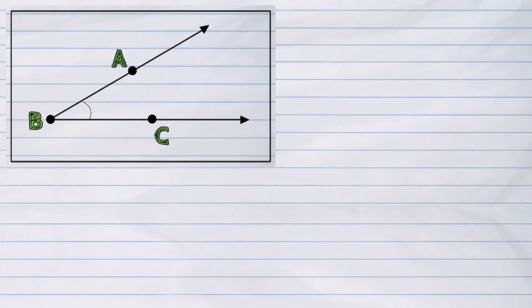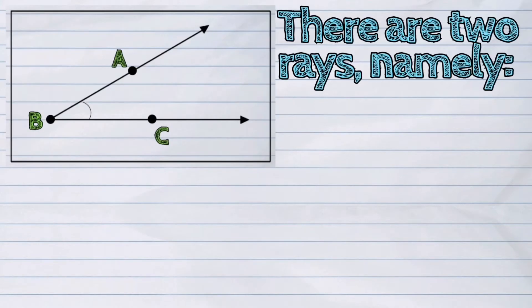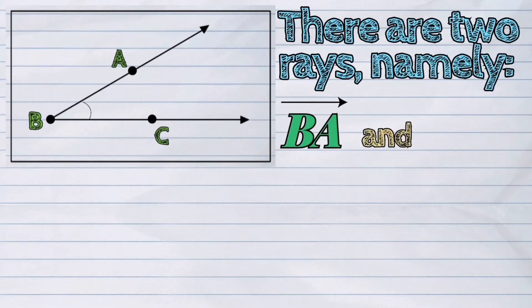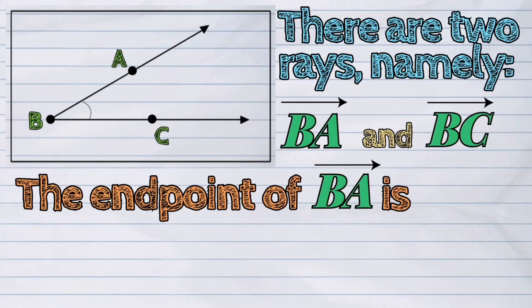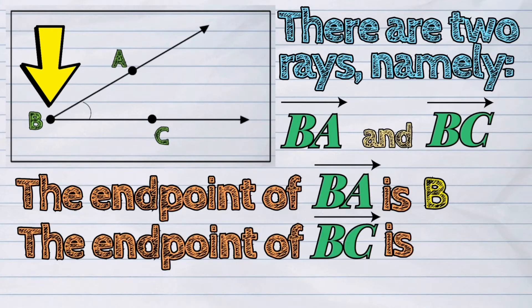In this figure, there are two rays, namely rays BA and BC. The endpoint of ray BA is B. The same thing with ray BC, which is also B.